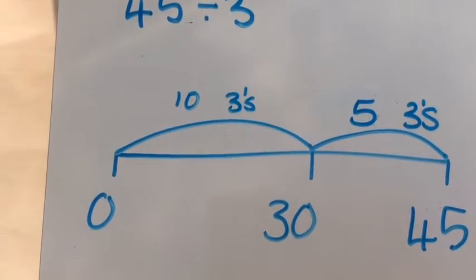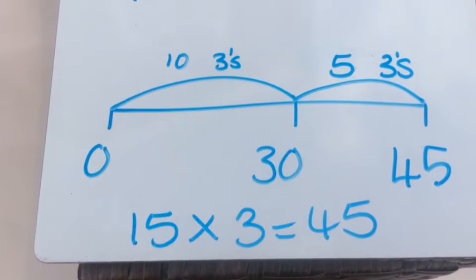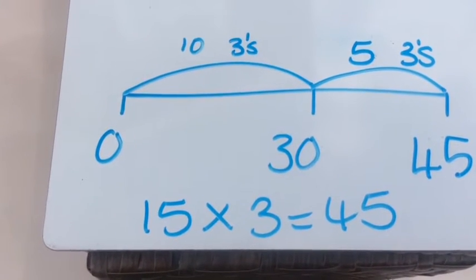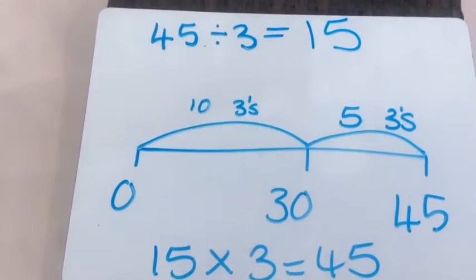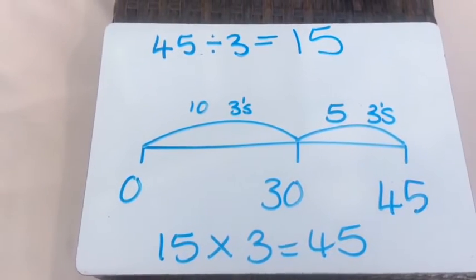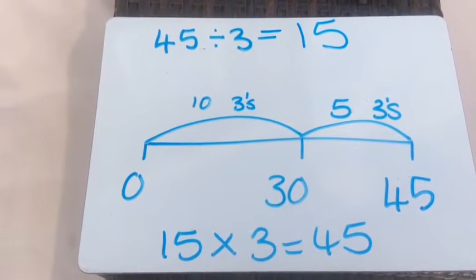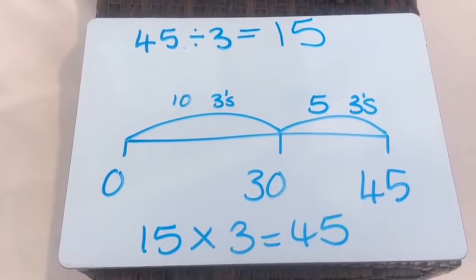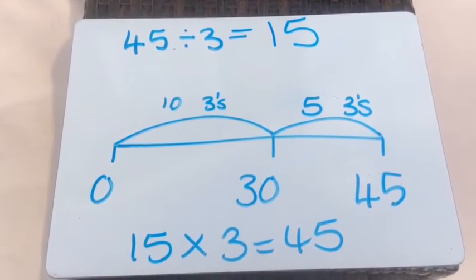Ten threes and five threes make... That's right, 15. So 15 multiplied by three is 45. We know that 45 divided by three is 15. All because, remember, multiplication is the inverse of division. Look at that family of facts, the number facts.